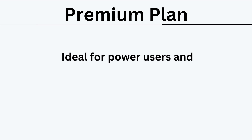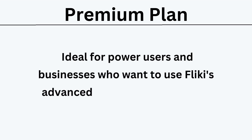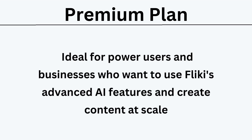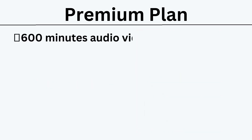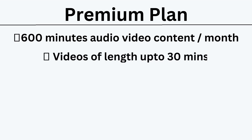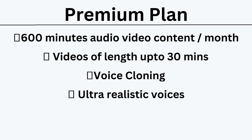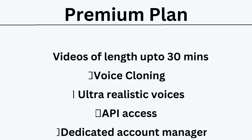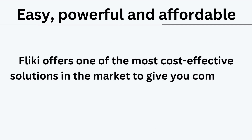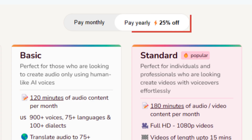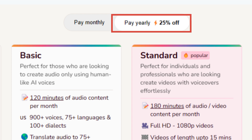The final package is the premium plan at $88 per month. Ideal for power users and businesses who want to use Fleeky's advanced AI features and create content at scale. This package includes everything in the standard plan, plus the ability to create 600 minutes of audio and video content per month, videos of length up to 30 minutes, voice cloning, ultra-realistic voices, API access, and a dedicated account manager. Fleeky offers one of the most cost-effective solutions in the market, and you can receive a 25% discount on all plans by purchasing an annual subscription.